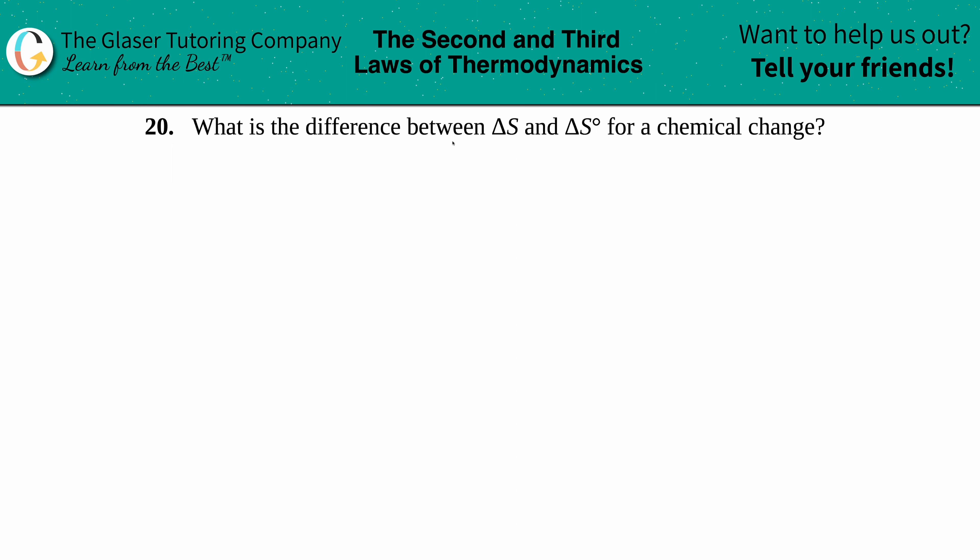Number 20: What is the difference between delta S and delta S notch for a chemical change? So there's two different types of entropy changes. Keep in mind that an S value, we're always talking about entropy, and entropy is always talking about randomness, disorder, chaos of the molecules inside of a certain container.